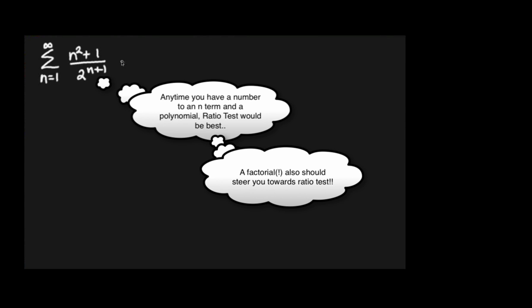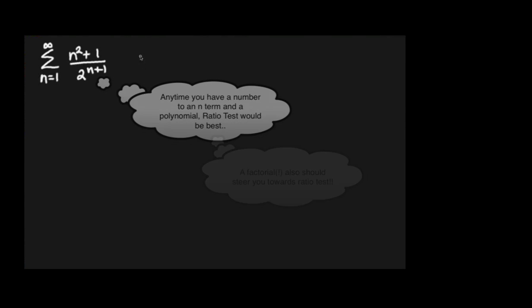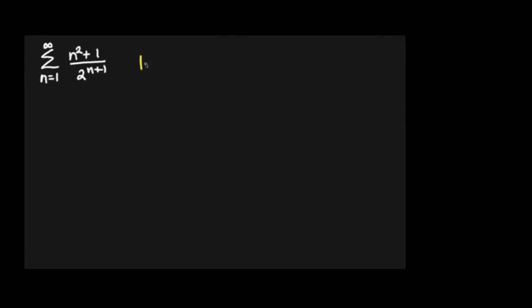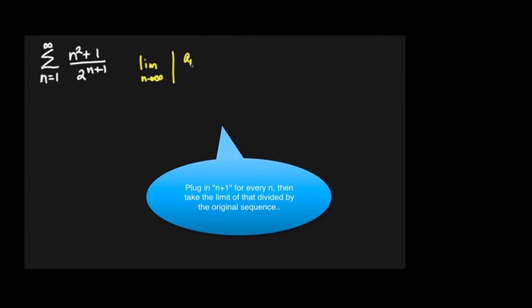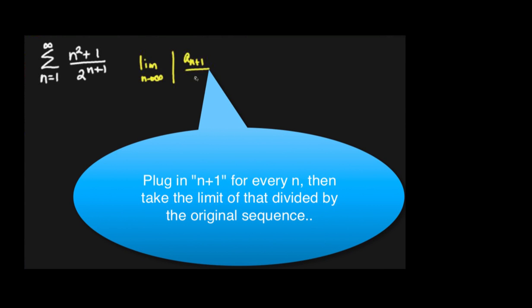So now that we know it's a ratio test, what does the general ratio test tell us? The limit as n goes to infinity of the absolute value of a(n+1) over a(n).